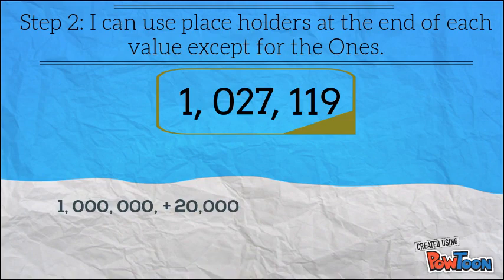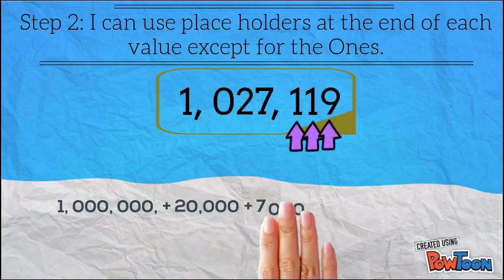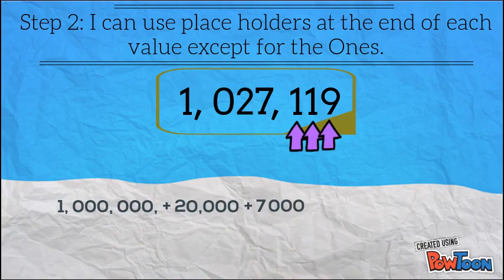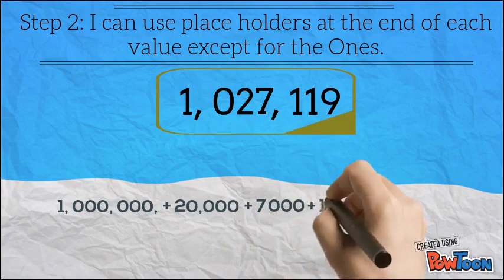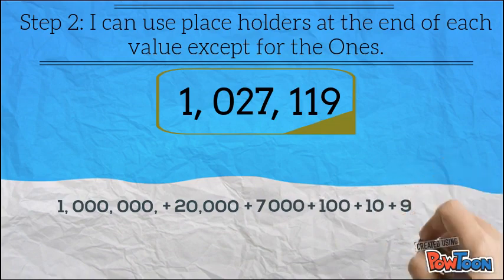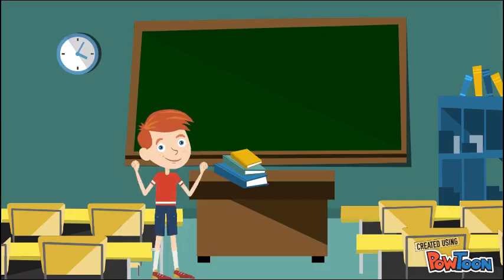Then we can add on the seven and again, don't forget all the placeholders — so we've created seven thousand. And so on until we have the full number. There you have it: two methods for reading and writing numbers to ten million using your brain.